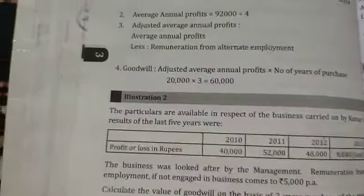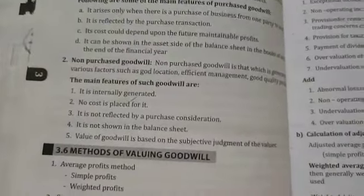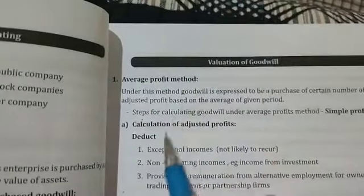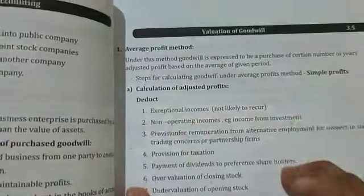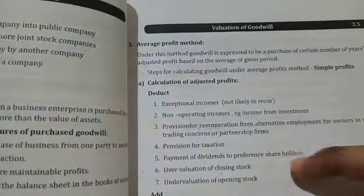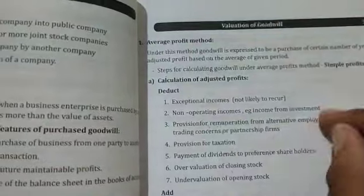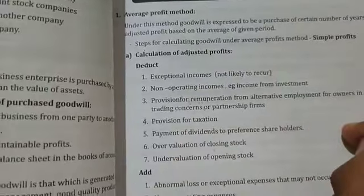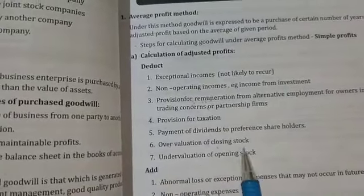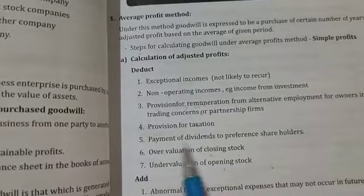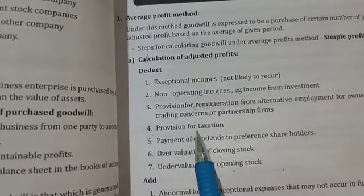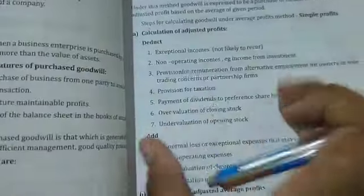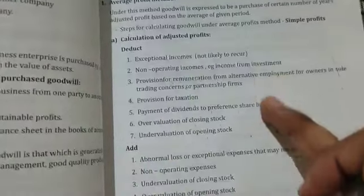There are different types of sums. In the average profit method, calculation of adjusted profit involves adding all profits and dividing by the number of years. Adjustments include minusing: overvaluation of opening stock, payment of dividend to preference shareholders, provision for taxation.